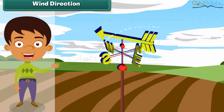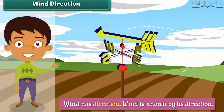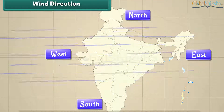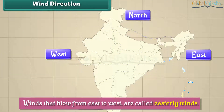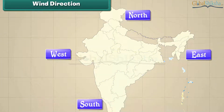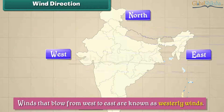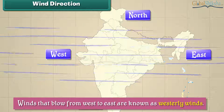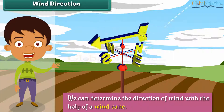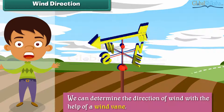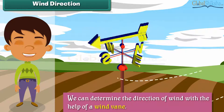Wind direction: Wind has direction and is known by the direction it comes from. For example, winds which blow from east to west are called easterly winds, and winds that blow from west to east are known as westerly winds. We can determine the direction of wind with the help of a wind vane, whose arrow indicates the direction from which the wind is blowing.